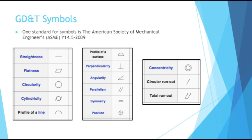Flatness was just one example of a GD&T symbol. One standard for symbols is the American Society of Mechanical Engineers, ASME, Y14.5-2009.